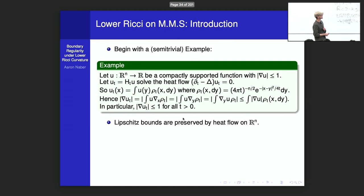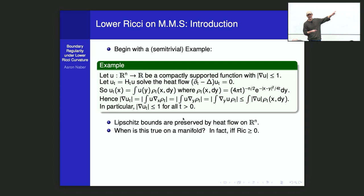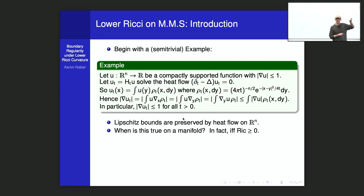This raises the question: when does this happen on a manifold? It turns out gradient bounds are preserved under the heat flow if and only if the Ricci curvature is non-negative. We also proved a pointwise version: the heat flow operator and the gradient almost commute — you can flow and then take the norm of the gradient, or take the norm first and then flow, and they commute up to a sign.